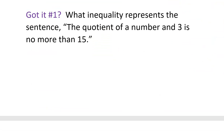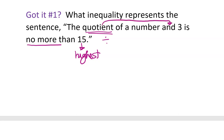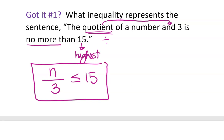You can pause the video now and try 'got it' question number one on your own, then come back and check your answer. The question is: what inequality represents 'the quotient of a number and three is no more than 15'? Quotient means division. No more than 15 means 15 is the highest number, so you need to go under that — less than or equal to 15. So: a number divided by three is less than or equal to 15.